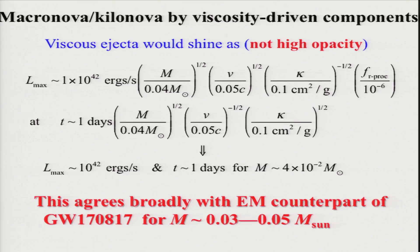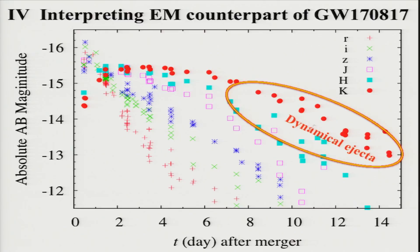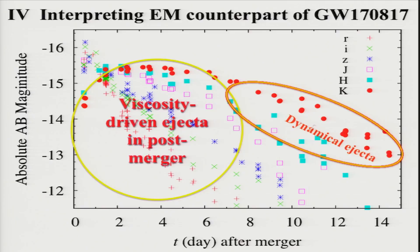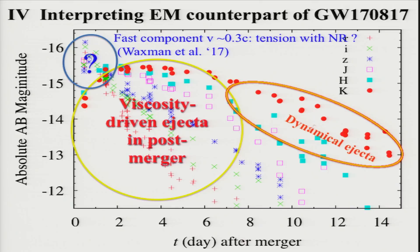Substituting typical values for this ejecta — mass is 0.04 solar mass, velocity is 5% of the speed of light, and kappa is 0.1 — we get 10^42 erg/s and a peak time of one day. This is roughly consistent with the electromagnetic counterpart of GW170817. But we still have one problem: the infrared emission could be reproduced by the dynamical ejecta, and the early bright phase could be reproduced by the viscous-driven ejecta from the post-merger phase. But in addition to this, we have a very fast, bright component with velocity about 0.3c.